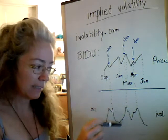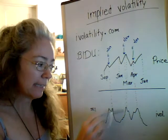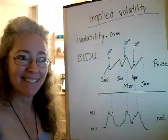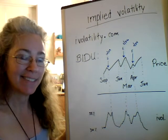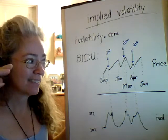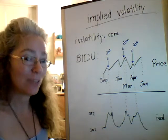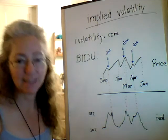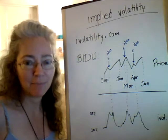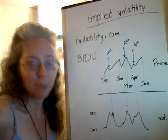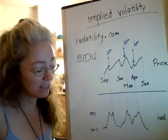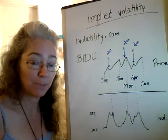As you get closer to earnings, the implied volatility generally starts to climb slowly. Then right after the earnings report comes out, all the news is out — and you get what is called a volatility crush. After earnings, people aren't as interested in paying a big premium because the stock probably won't move a huge amount again right away. So the implied volatility goes down, and that means your option price will also go down.